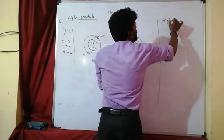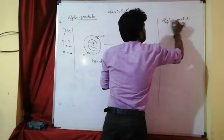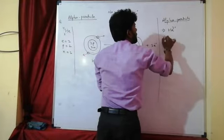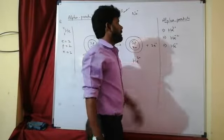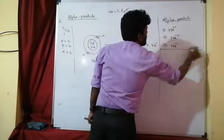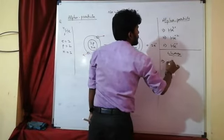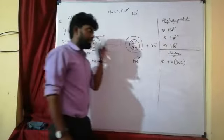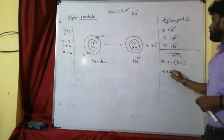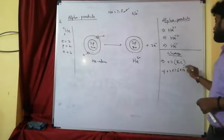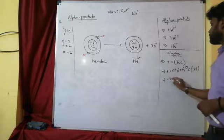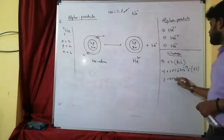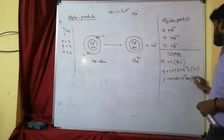This doubly-charged helium ion He²⁺ (also written as He²⁺ or He⁺⁺) is known as the alpha particle. Its relative charge is +2. In the SI system, the charge is +2×1.6×10⁻¹⁹ coulombs, and in CGS units it is +2×4.8×10⁻¹⁰ esu.